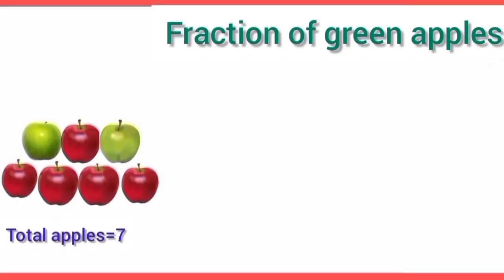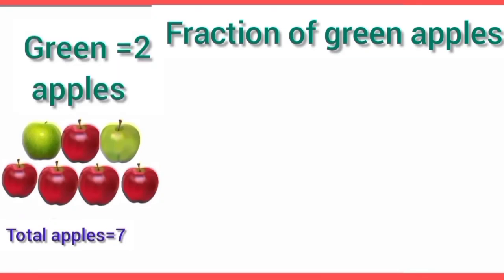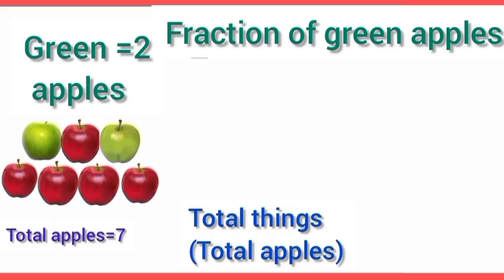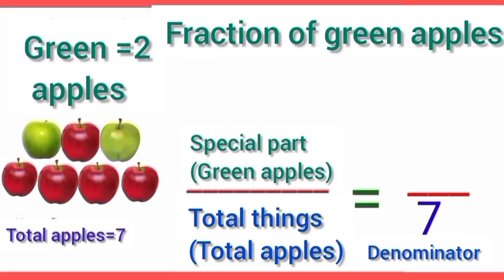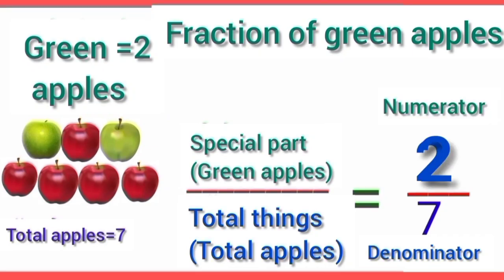Let's find out the fraction of green apples. Out of total 7 apples, 2 apples are green. So dear students, to find out its fraction, first of all we will find the denominator — that is, total apples — and the total number of apples is 7. It is the denominator, and the special part means green apples are the numerator, which is 2. So dear students, the fraction of green apples is 2 upon 7.